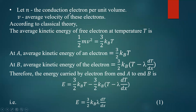Let N be the number of conduction electrons (free electrons) per unit volume, and V be the average velocity of these electrons. According to classical theory, the average kinetic energy of a free electron at temperature T is given by (1/2)mV² = (3/2)K_B T. Therefore the kinetic energy of an electron mainly depends on temperature — that is the classical theory.